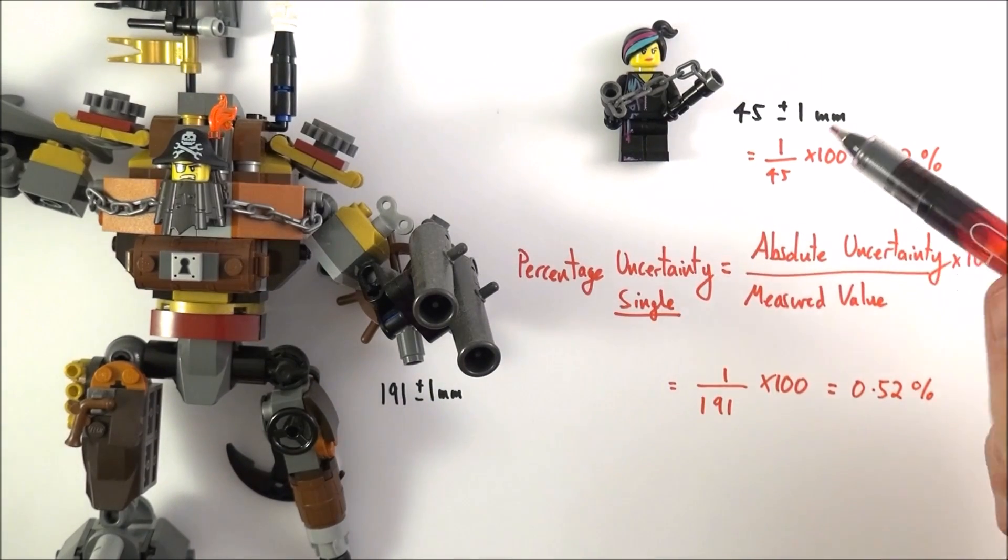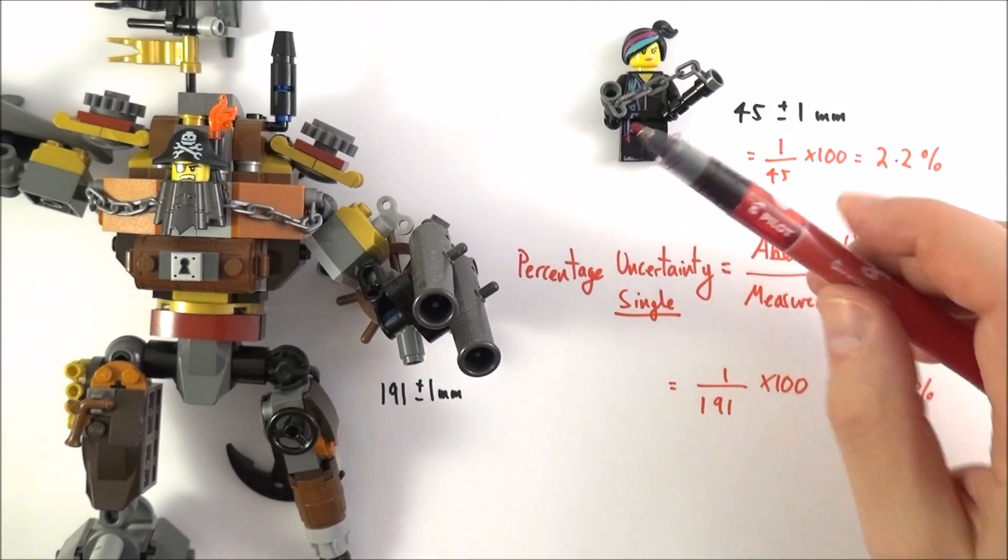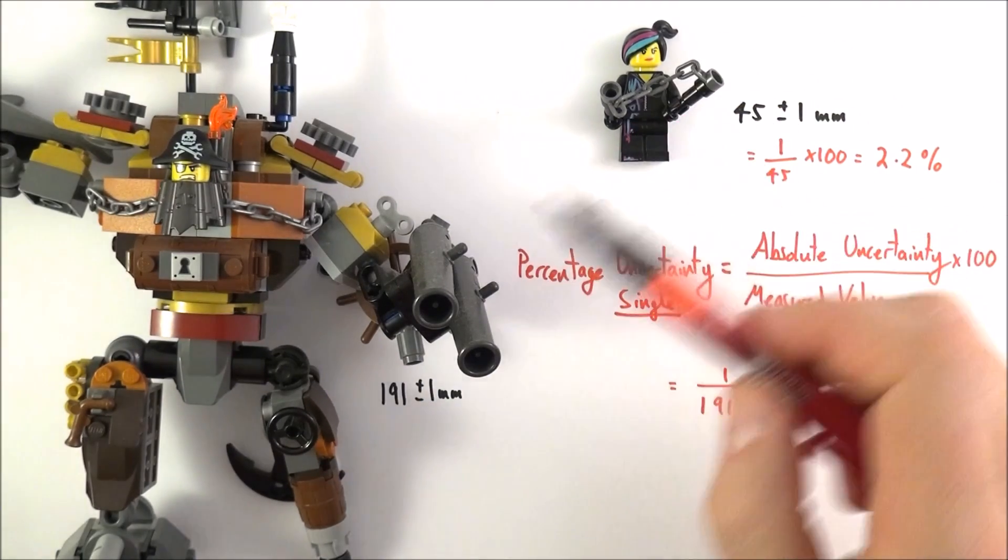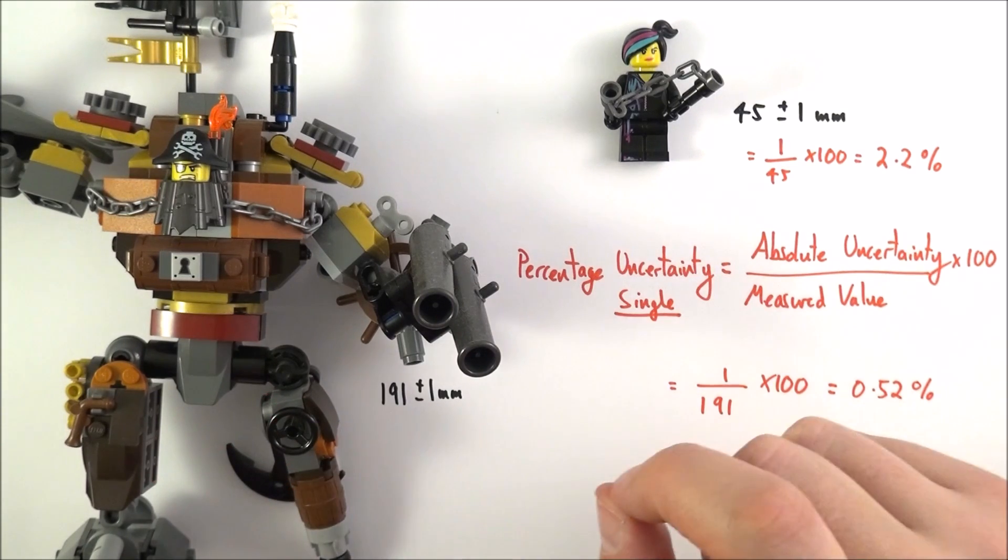So what we can see here is although these two objects have exactly the same absolute uncertainty, the percentage uncertainty gets a lot less when we have a larger value, and that's something which is really important that you need to be able to work out.